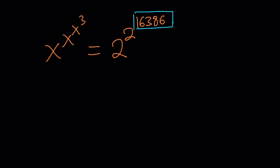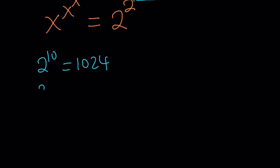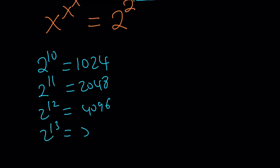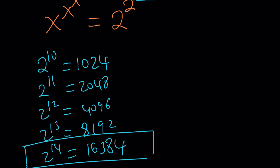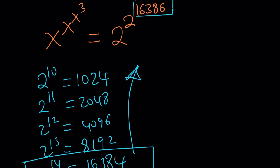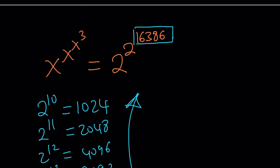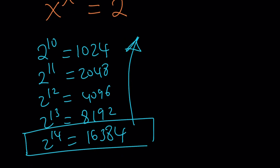2 to the 10th power is 1,024. Then 2 to the 11th is 2,048. 2 to the 12th is 4,096. Then 8,192, and if you keep doubling, you get 16,384. That's the number we're looking for — that's how this problem came about. So we break down 16,386 as 16,384 plus 2, to extract 2 to the 14th power.